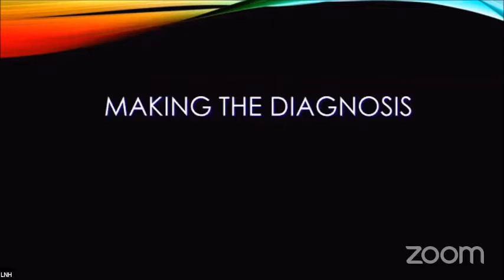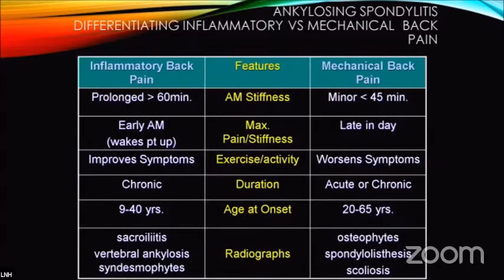Making the diagnosis is important because back pain in these patients differs from mechanical pain. Inflammatory pain is prolonged, not associated with activity, and occurs more in the early morning, while mechanical back pain is worse when the patient is tired or has been working. Activity actually improves inflammatory back pain but aggravates mechanical pain. Inflammatory back pain typically has an early onset, while mechanical back pain affects a middle to older age group. Radiographic findings in inflammatory back pain include sacroiliitis and vertebral ankylosing spondylitis, while degenerative changes show osteophytes, spondylolisthesis, and scoliosis.